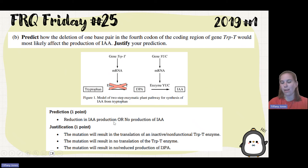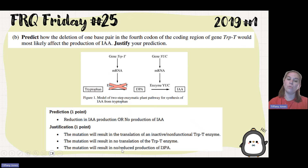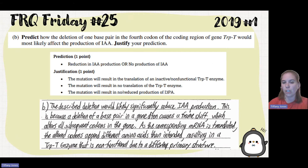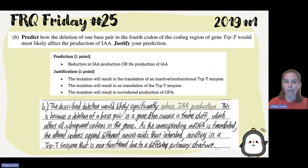So there would be a reduction or no production of IAA. The mutation results in translation of an inactive, non-functional trypte enzyme, or no translation at all, leading to no or reduced production of I3PA. Students wrote: 'The described deletion would likely significantly reduce IAA production. This is because a deletion of a base pair often causes a frameshift, which alters all subsequent codons. As the mRNA is translated, altered codons append different amino acids, resulting in a non-functional trypte enzyme due to a differing primary structure.'